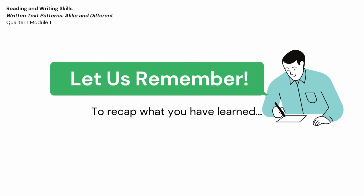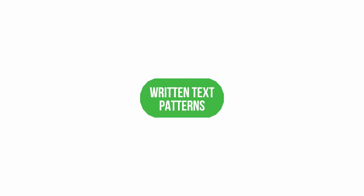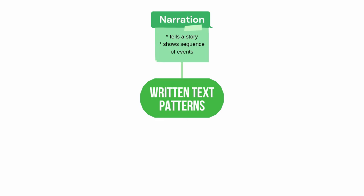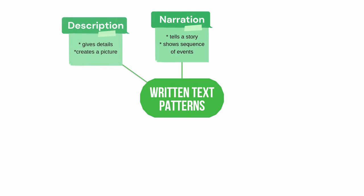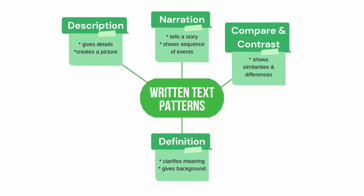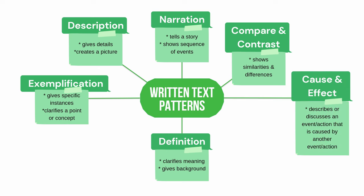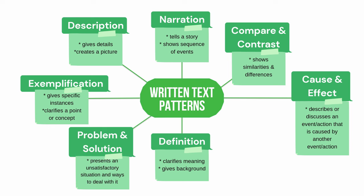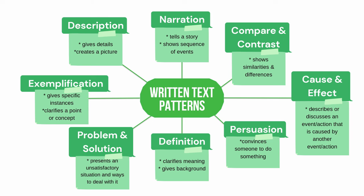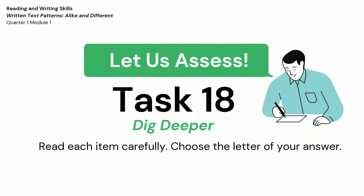Let us recap what you have learned. The ways of writing a paragraph are called written text patterns. We have: Narration, which tells a story and shows sequence of events; Description, which gives details and creates a picture; Definition, which clarifies meaning and gives background; Compare and contrast, which shows similarities and differences; Exemplification, which gives specific instances and clarifies a point or concept; Cause and effect, which describes an event or action caused by another event or action; Problem and solution, which presents an unsatisfactory situation and ways to deal with it; and Persuasion, which convinces someone to do something.